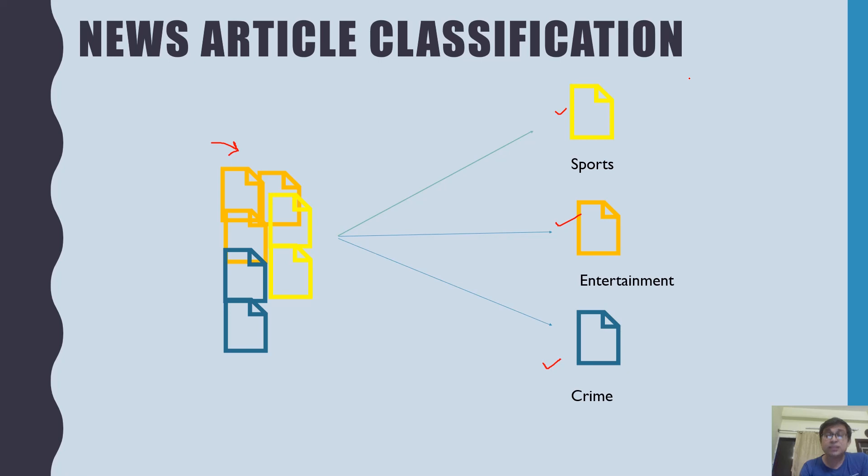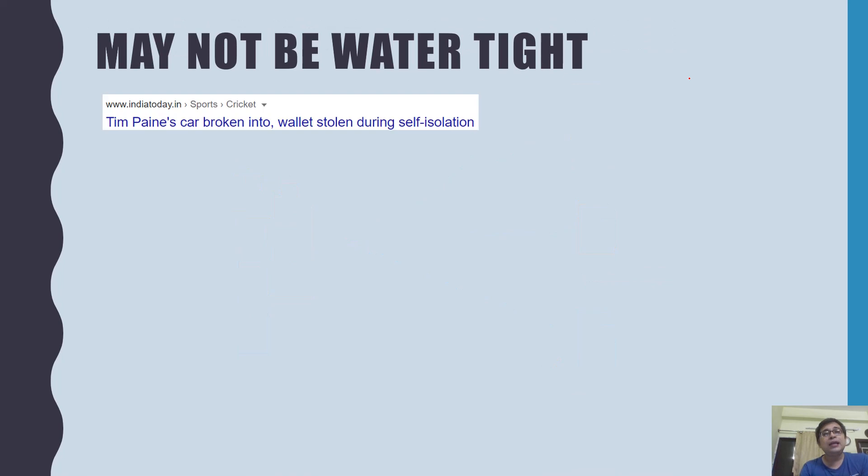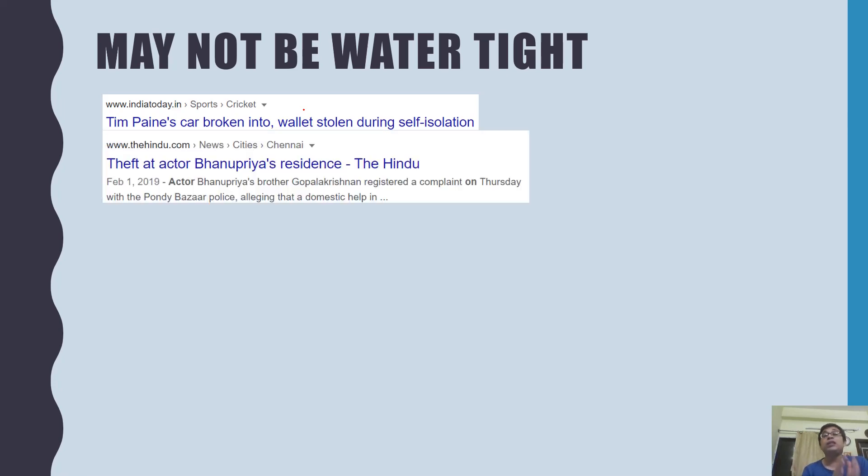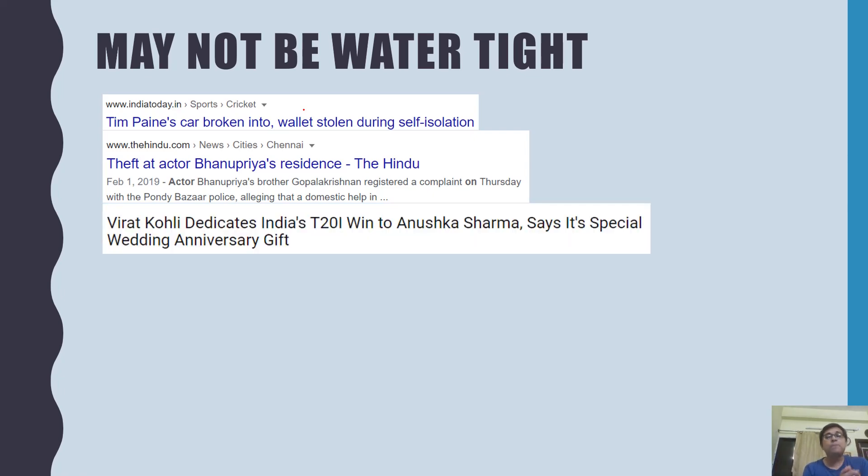It turns out that this definition, this classification may not be so watertight. Let's look at an example. Here a crime is happening to a cricketer; his car is broken into and his wallet is stolen. Which category will this go to? This can go to sports, this can go to crime also, and actually this should go to both. Similar example: a theft is happening at an actor's house.